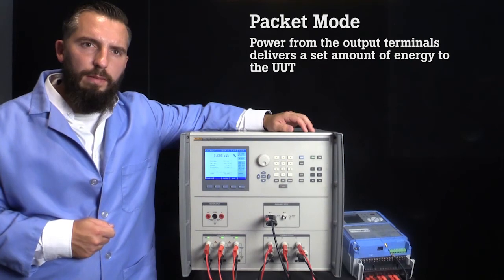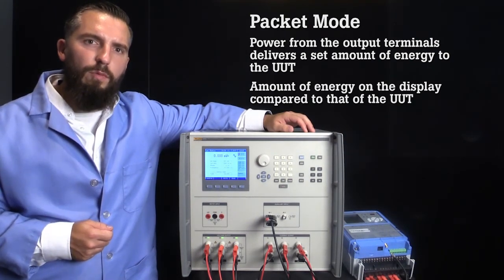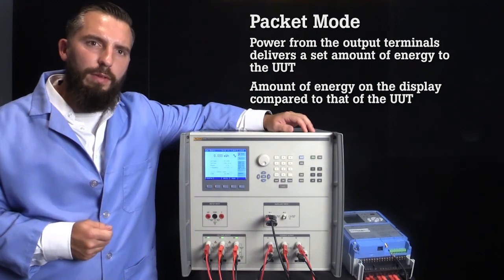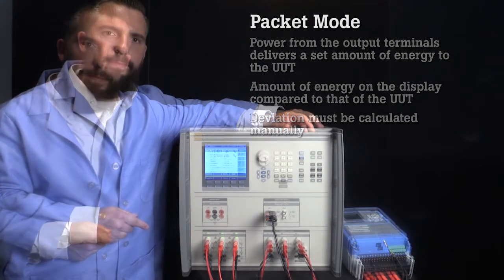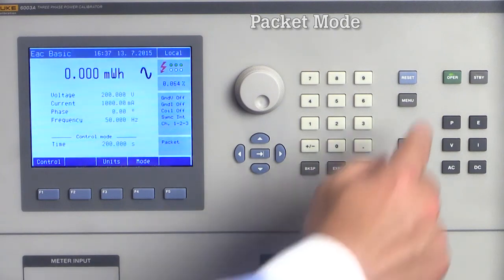To test the accuracy of the meter, the amount of energy shown on the display will be compared to that of the energy meter and the deviation must be manually calculated. Using this energy meter, I will run an example packet test which will let me determine if it measured and reported the correct watt hours. I have configured my test for 200 volts AC, 50 hertz, and 1 amp. I will set the packet time for 200 seconds. I have also prepared the meter to start measuring from zero. I will now push operate and you will see that the test starts and the countdown begins.